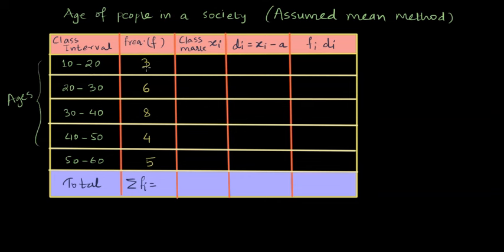One of the methods is that we can multiply the class mark with the frequency. So here the class mark is 15. In order to find the class mark, what we do is we add the lower and upper limits and divide by 2. So we get 15. Similarly for the second one, 20 plus 30, 50 divided by 2 is 25 and so on. We can complete writing the class marks.